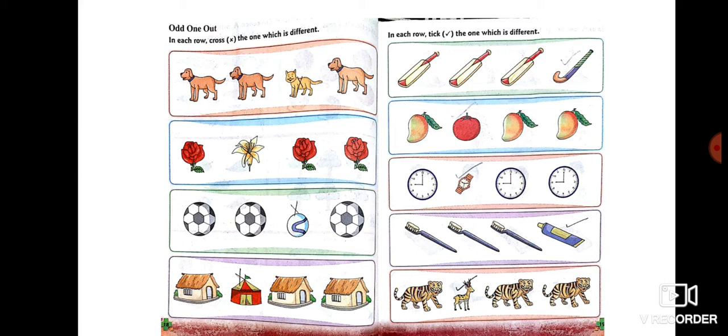On page 18, we have to cross the different one. In the first row there are three dogs but one cat, so let's cross out the cat. Why? Because it is different from the other three objects. Likewise, we have to take the odd one out in page 19.